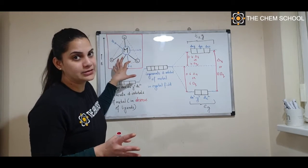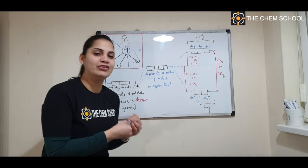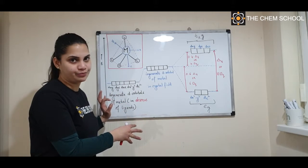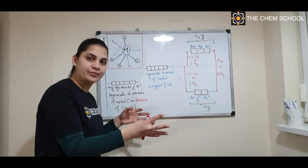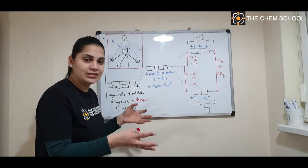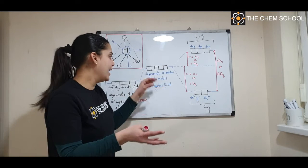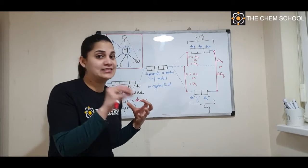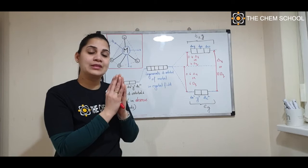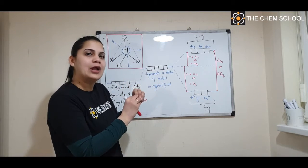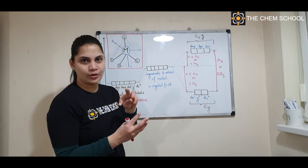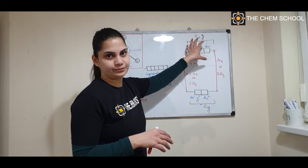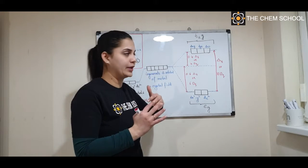To understand this with an energy diagram: initially, all five d orbitals are degenerate — they have the same energy in the absence of ligands. As the ligands start approaching, electronic repulsion occurs and the energy of the system rises. Then as the ligand electrons interact with the d orbitals, the degenerate d orbitals split into two sets: eg and t2g.